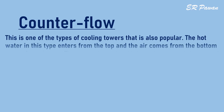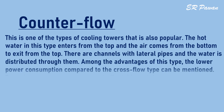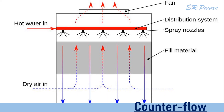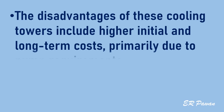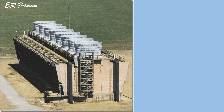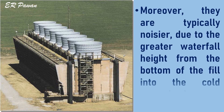Counter flow: this is one of the popular types of cooling towers. The hot water enters from the top and the air comes from the bottom to exit from the top. There are channels with lateral pipes and the water is distributed through them. Advantages include lower power consumption compared to cross flow, easy and affordable maintenance, and a more compact build. The breakup of water into spray makes heat transfer more efficient. Disadvantages include higher initial and long-term costs primarily due to pump requirements.